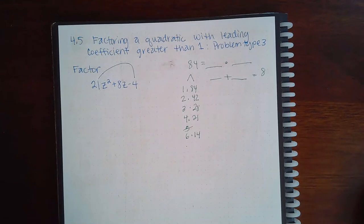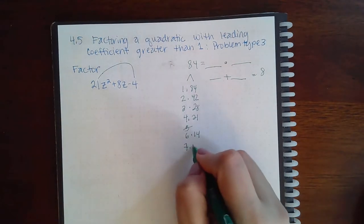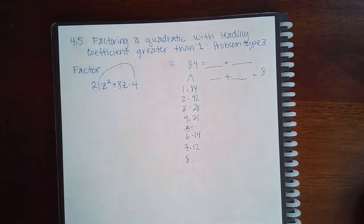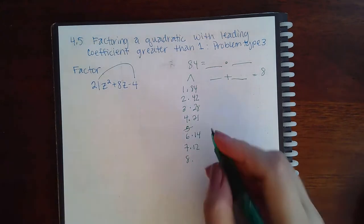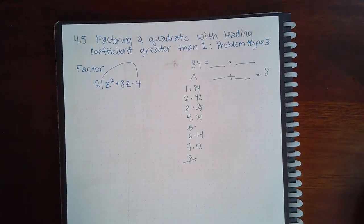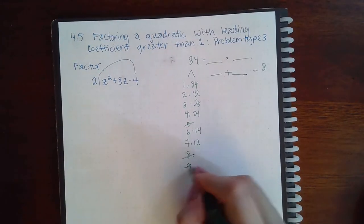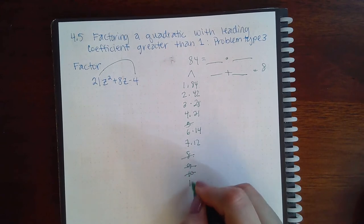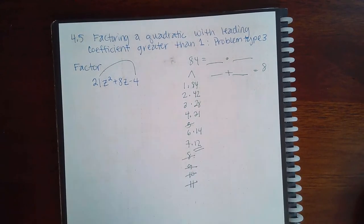7 times 12, 8, will not work, 9, 10 will not work, 11 will not work, and 12 is already on the list. So we know we've got them all.